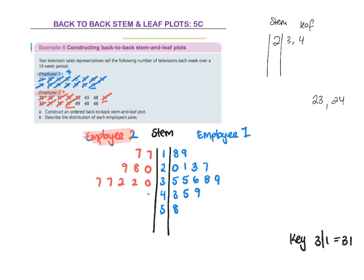And then we're going to do 30. I have a 30. I have two 32s. And two 37s. Then I'm going to do 40. I have a 0, 40. Then I have a 48 and a 49.